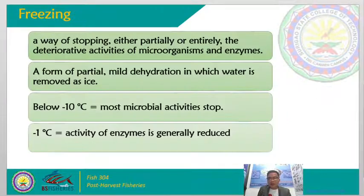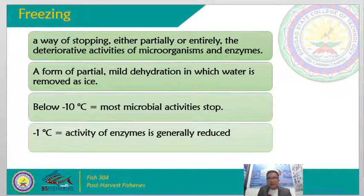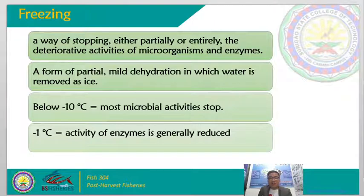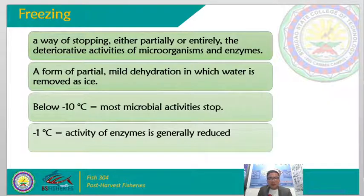Freezing is a way of stopping either partially or entirely the deteriorative activities of microorganisms and enzymes. In our previous discussions in module 2, we discussed that the factors causing spoilage are basically microorganisms, enzymes, and other chemical activities happening in the flesh of aquatic products. In freezing, these activities that basically spoil our aquatic products are stopped — the activities of microorganisms and enzymes are halted.